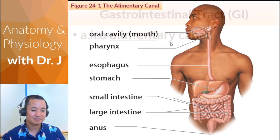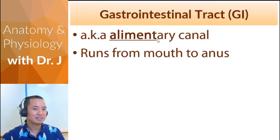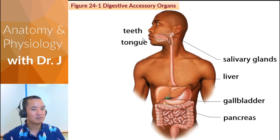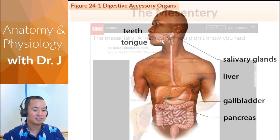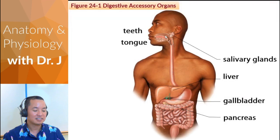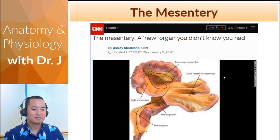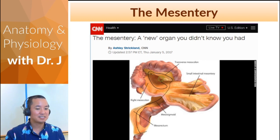The digestive accessory organs are not part of the actual tube but are along the way and important for both physical and chemical digestion. They contribute significantly to the overall digestion of food. Interestingly, a few years ago there was news about the mesentery being described as a new organ — though most anatomy professors were already aware of it.